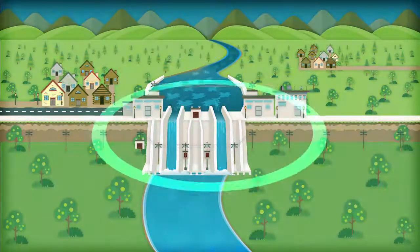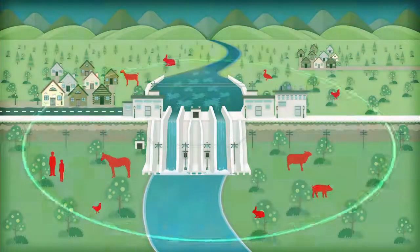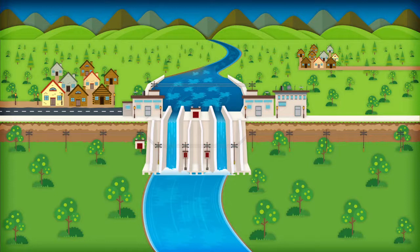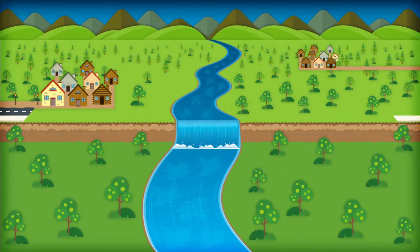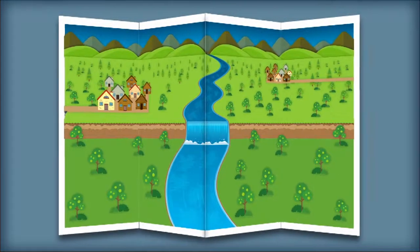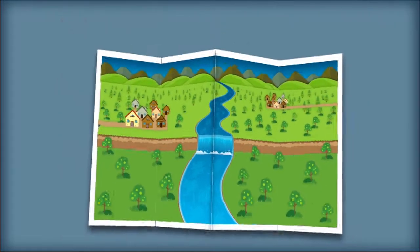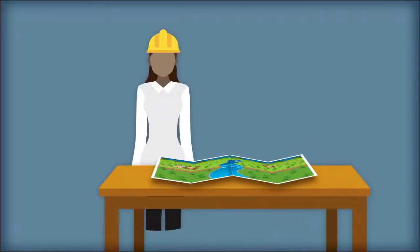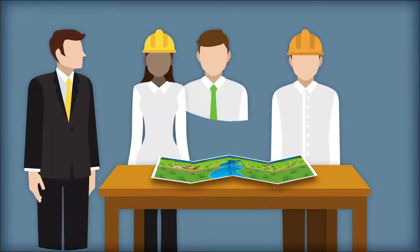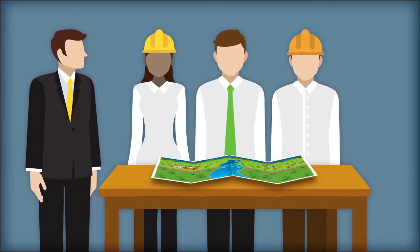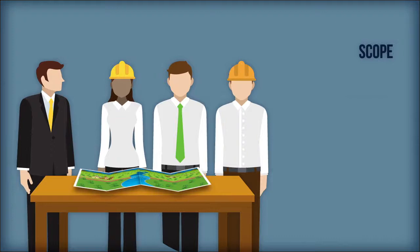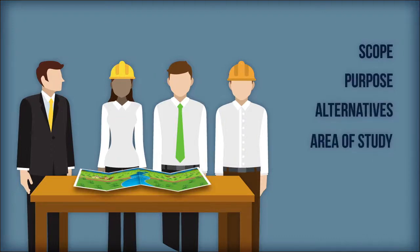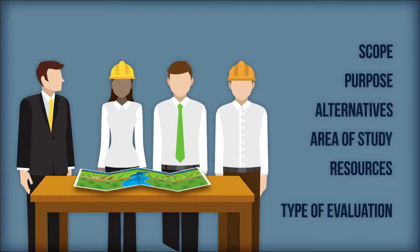Some impacts are obvious, while others are not. The scoping phase should take place at the beginning of the EIA process, and ideally include the participation of the reviewer. The participation of reviewers in this phase shapes the EIA process, including the scope, purpose, alternatives, area of study, resources, and the type of assessment.